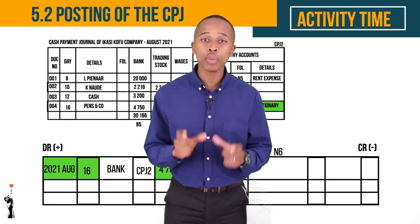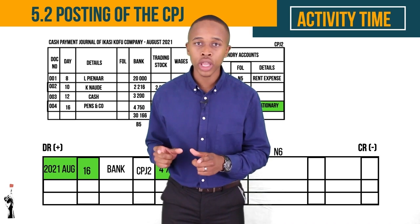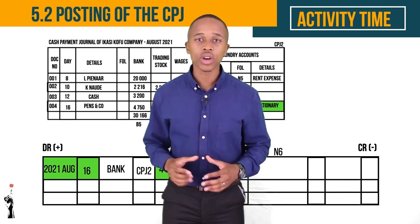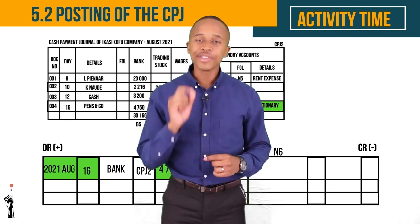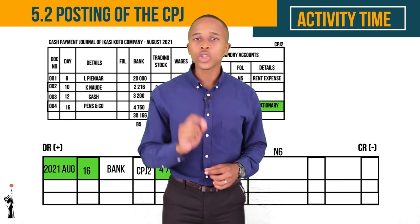All right, Grade Nine learners, I hope this activity helped you to understand how you post the CPJ into the general ledger. It's very likely that you wouldn't be able to get everything on that first time, so let's run through the activity once more.